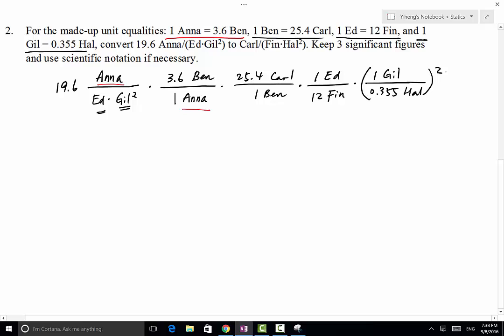So now as you can see, Anna cancel out, Ben cancel out, Ed cancel out, and then lastly gill squared and gill squared cancel out.